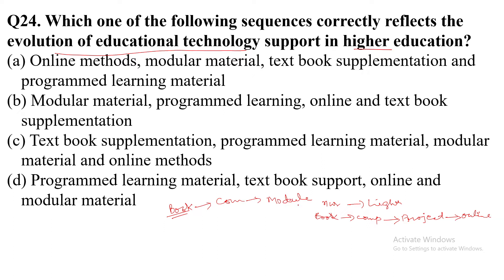Then what do we do online — that is the reflective level. What is the understanding level? That involves books and computers. Books and computers are at the memory level. So let's see what the options say: the options are online method, modular material, textbook supplementation, and programmed learning material.